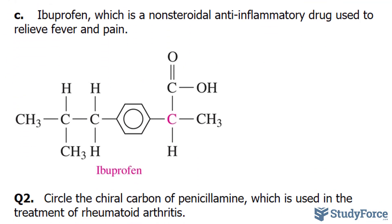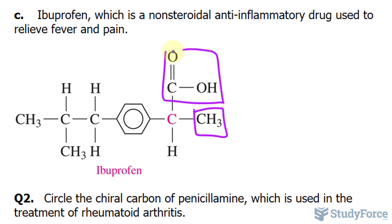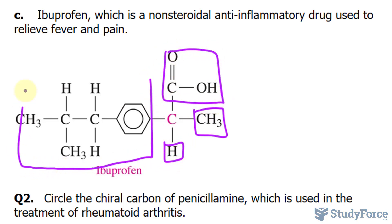We'll do the same test for C. Looking at the substituents — here, here, and the rest — none of them happen to be the same. So this carbon is also chiral.